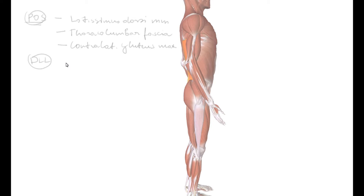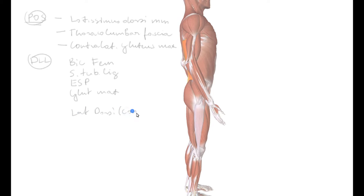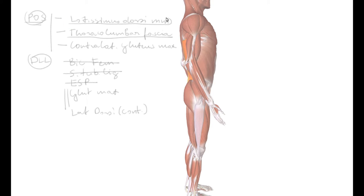The Deep Longitudinal Line consists of biceps femoris, sacrotuberous ligament, erector spinae muscle group, gluteus maximus, as well as the opposing side's latissimus dorsi — contralateral. If we take away biceps femoris, sacrotuberous ligament, and erector spinae muscle group, we are basically left with the Posterior Oblique System: gluteus maximus, latissimus dorsi, and thoracolumbar fascia in between. These are huge structures — latissimus dorsi and gluteus maximus are two of the biggest muscles in our body.